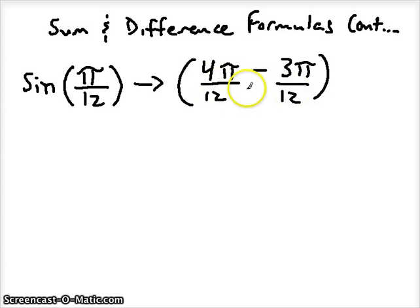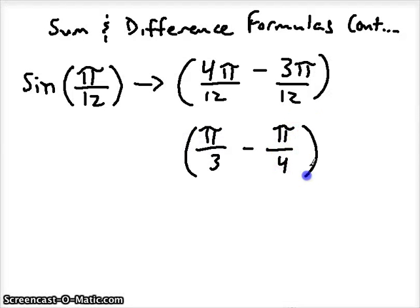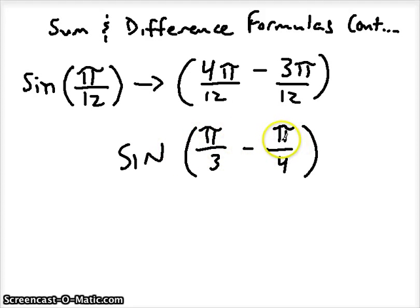If I reduce these fractions, I get intervals that I am familiar with, because 4/12ths reduces to just 1/3rd, and 3/12ths reduces to just 1/4th. So really this is the difference or subtraction that we're using. And so we can use the difference sine formula using these angle measurements, and that should give us the value of this expression. Let's break it up using our difference of sine formula.